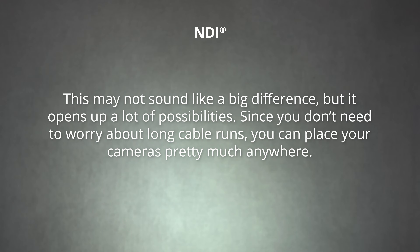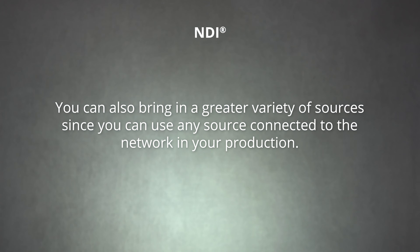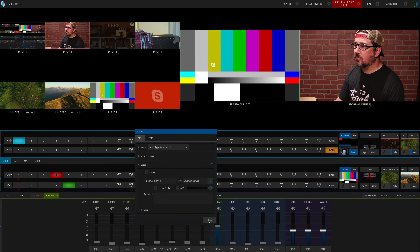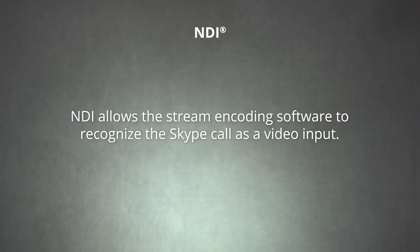Since you don't need to worry about long cable runs, you can place your cameras pretty much anywhere. You can also bring a great variety of sources, since you can use any source connected to the network in your production. Basically, video over IP tech like NDI provides an easy way to connect all of your production gear together. In our case, we'll use NDI to bring a video signal from Skype into our live stream. NDI allows the live streaming software to recognize the Skype call as a video input.